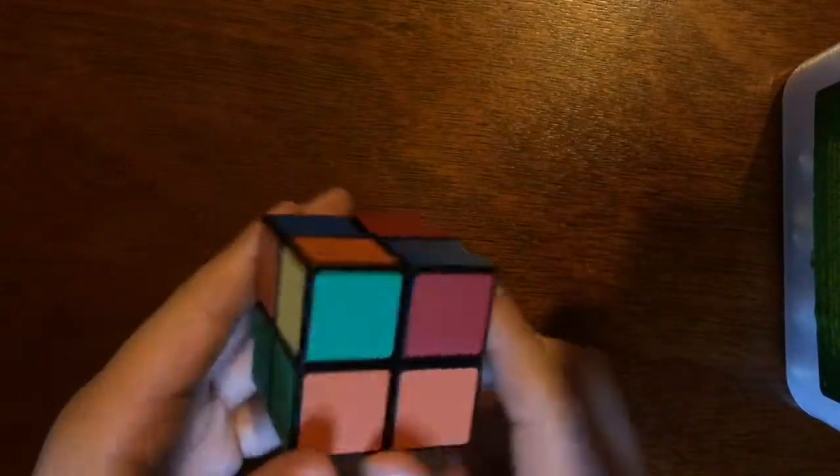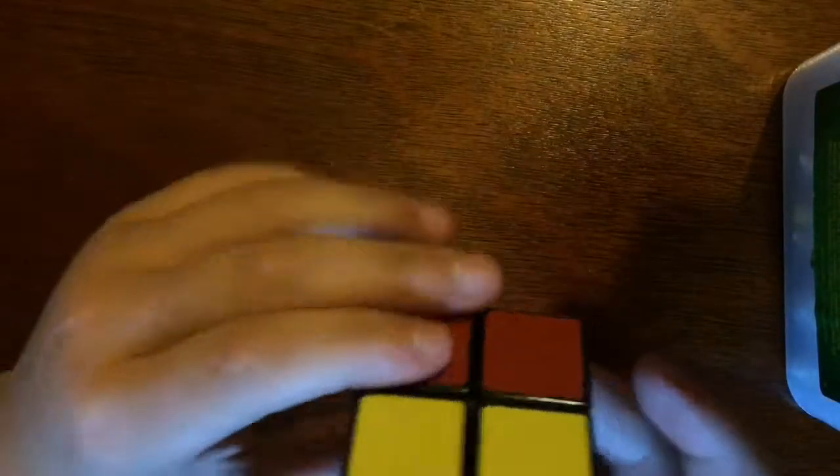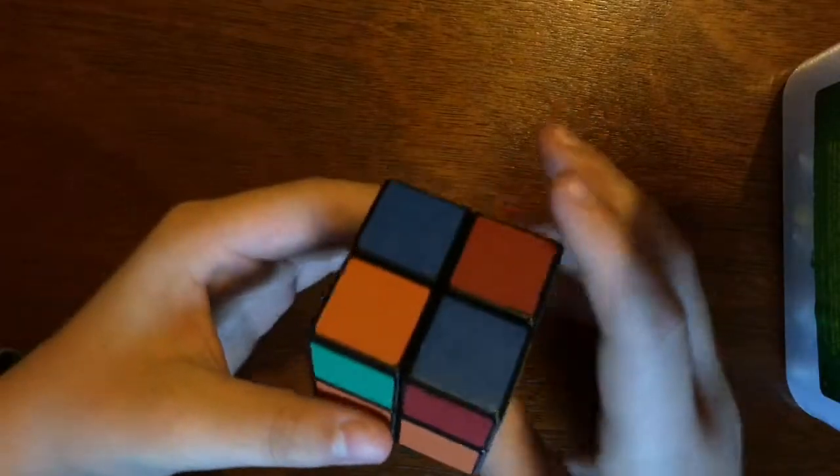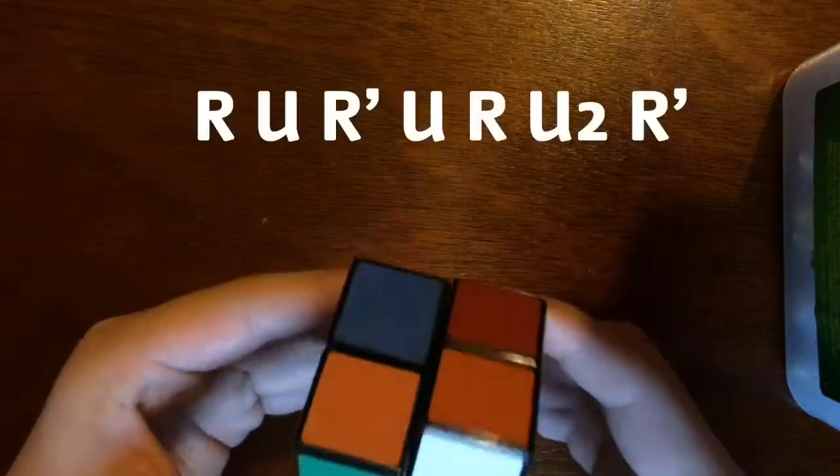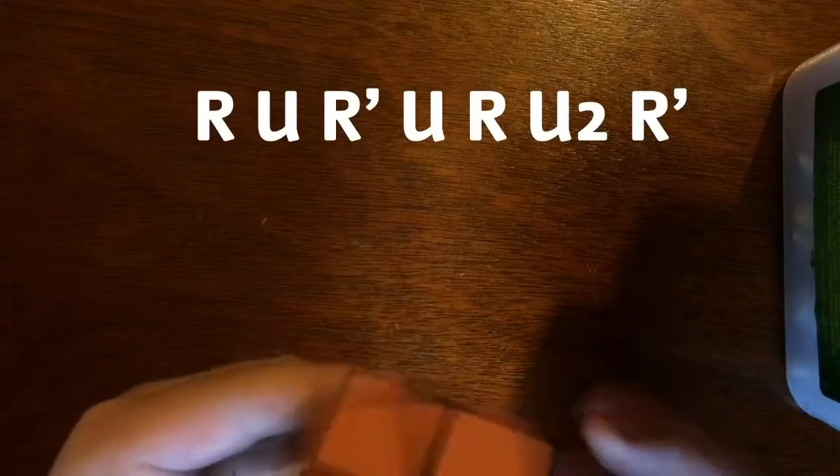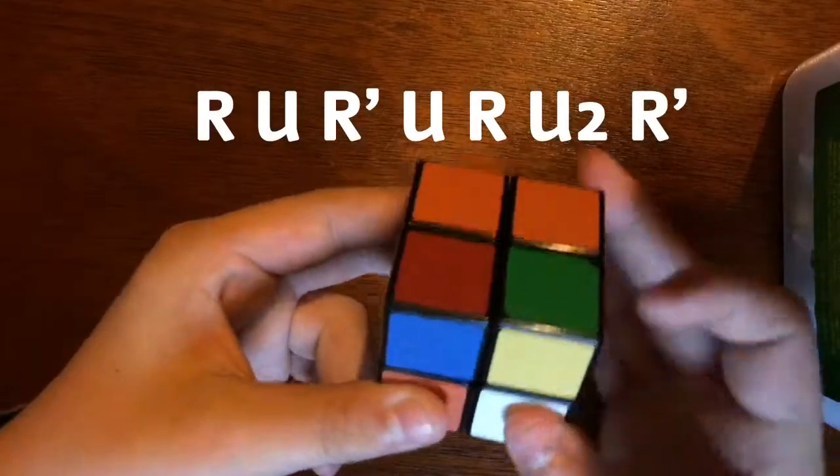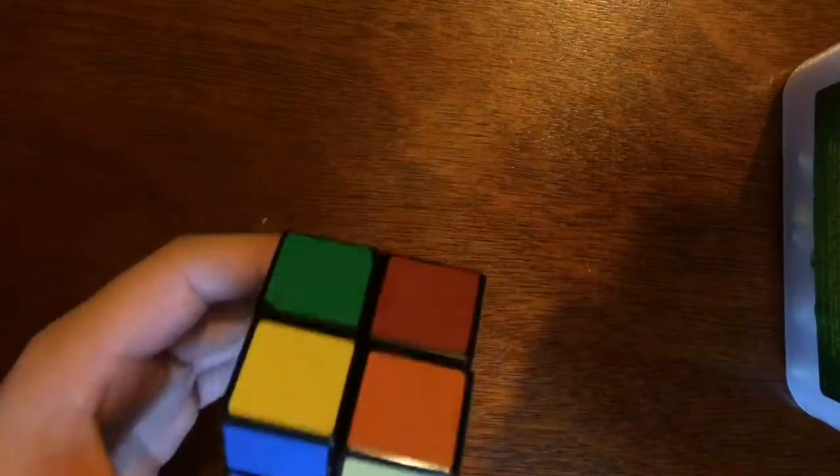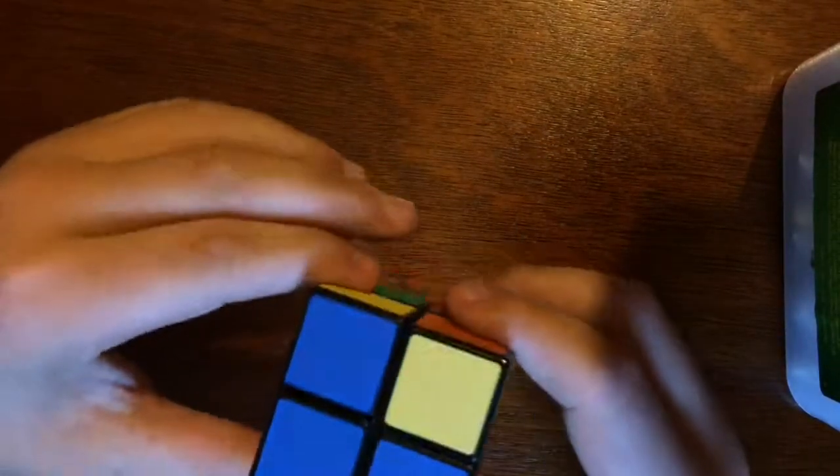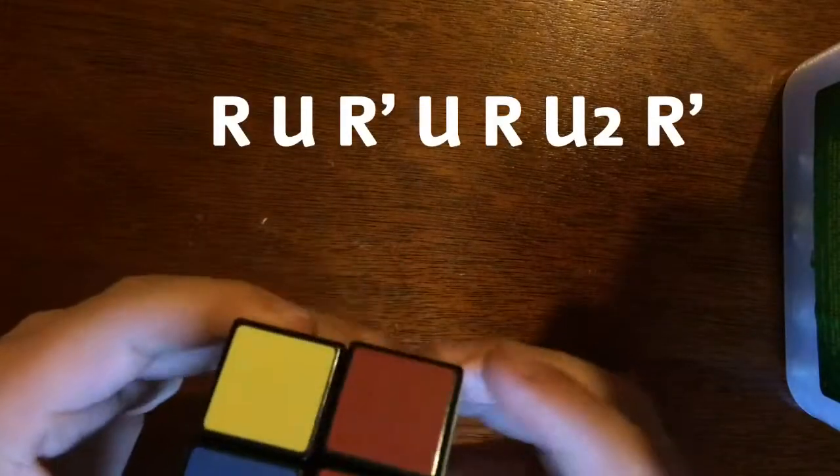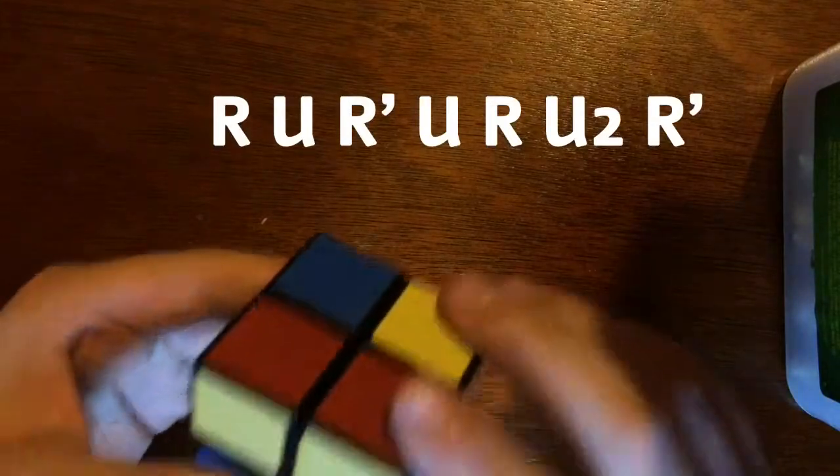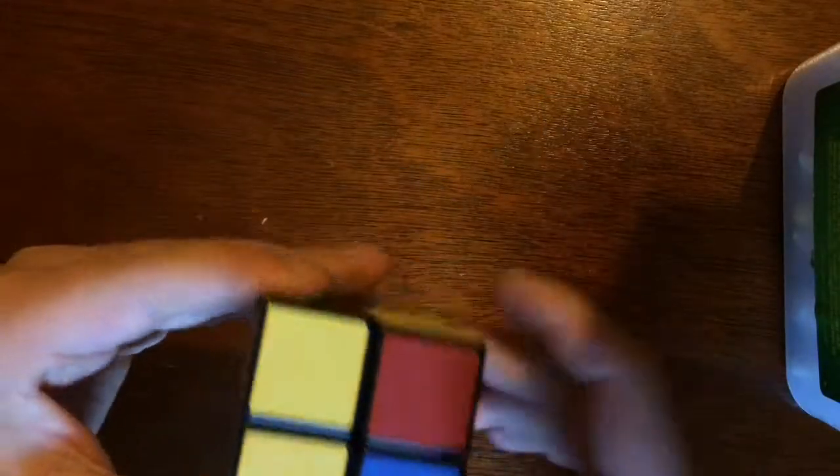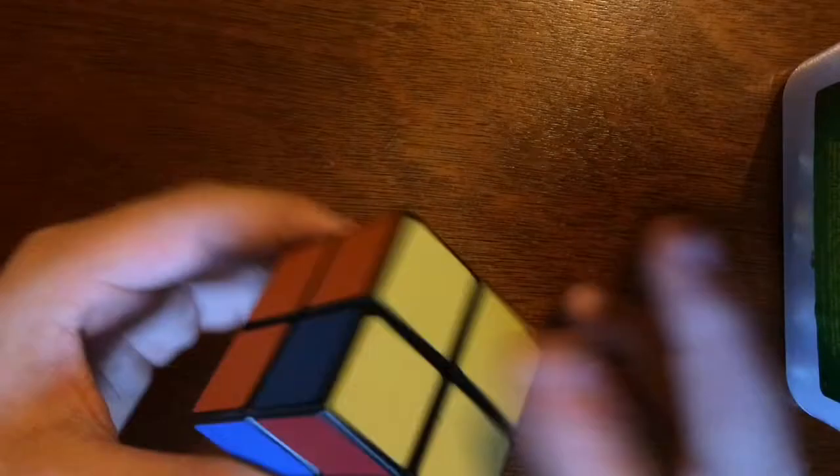Okay, so when we're at this position, like I said, we got the two yellows. We point them to the back. We do the same algorithm, which is right, up, right inverted, up, right, up two, and then right inverted. Now this is our key position we were at last time. And I just wanted to redo it and show other situations. So we're going to do the same algorithm, which is right, up, right inverted, up, right, up two, right inverted. Now we just solve that side.